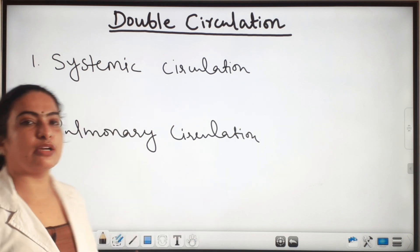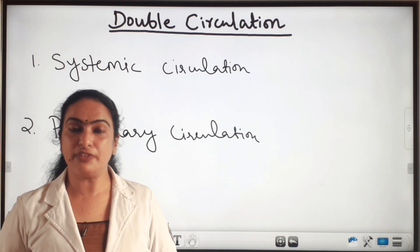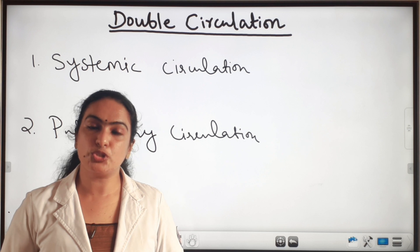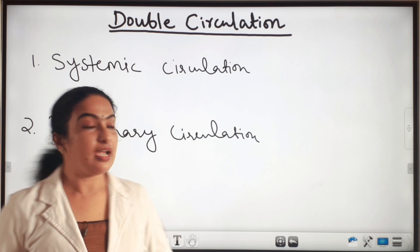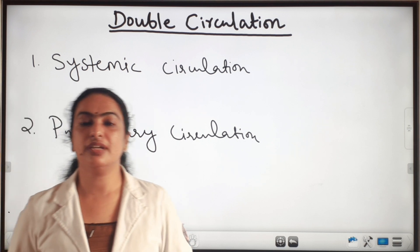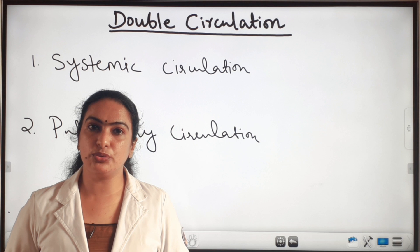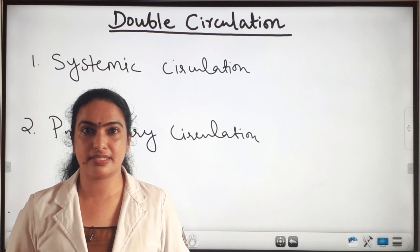In systemic circulation, the blood flows to and from the body. But in pulmonary circulation, the blood flows to and from the lungs.